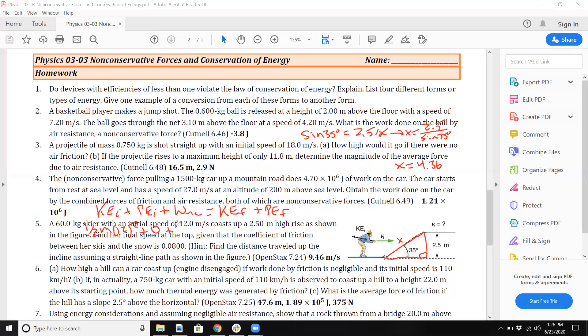Now this is going to be my force due to kinetic friction times my distance, which I got is 4.36, equals my final kinetic energy, which is going to be one half m v squared. I'm going to solve for v eventually. I already know mass is 60, plus mgh.